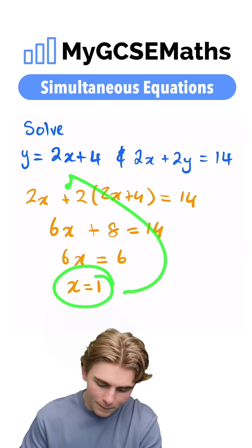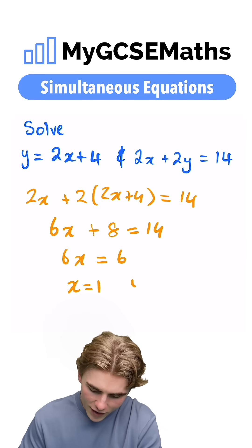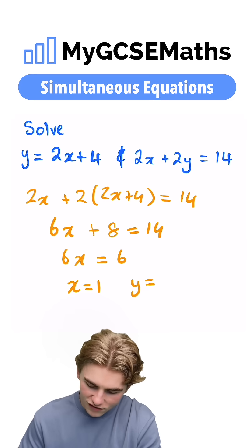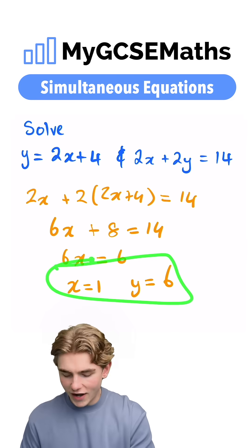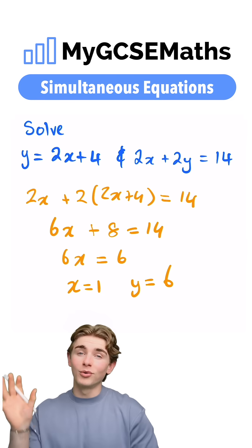Then we can plug our x equals 1 back into our original equation. We get y equals 2 times by 1, which is 2 plus 4, which is going to be 6. So our final answers are x equals 1 and y equals 6.